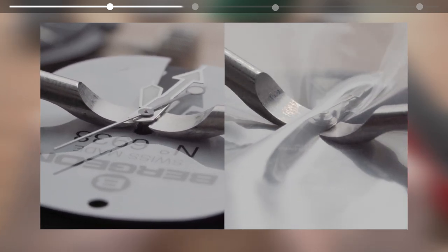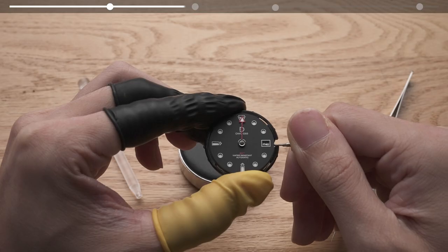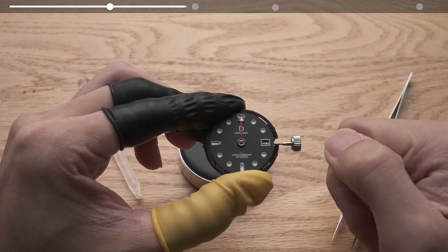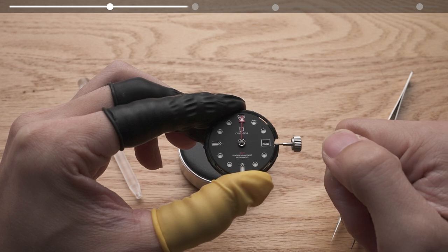If your watch hand alignment is off, the best practice is to remove and reinstall it. We have a link for our watch hand removal guide in the description. Keep in mind that the watch hands can become loose if you remove and reinstall them too many times.